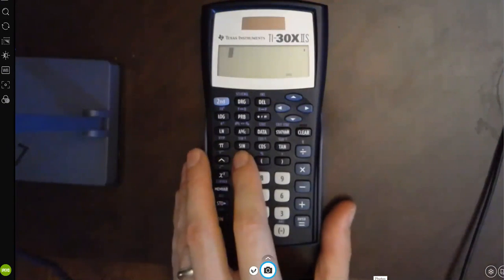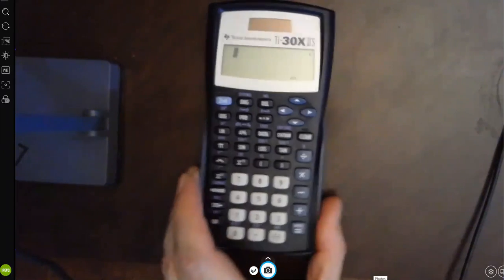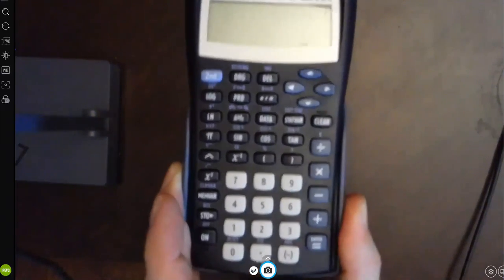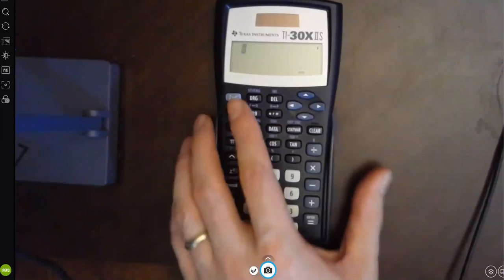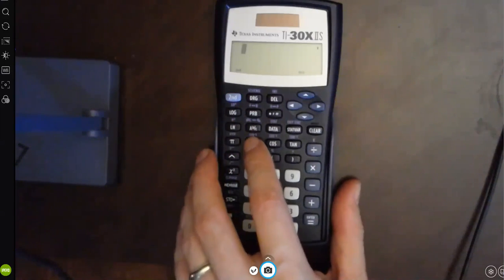On these calculators, this is the sine button. There's my SIN. Might be a little hard to see. Let me move that forward. Right above it in blue is the inverse sine. I'm going to hit second, and then that sine button.